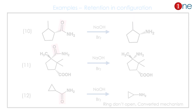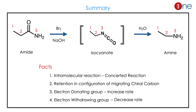Let us summarize the facts seen in the Hofmann reaction. An amide converts into an amine through an isocyanate intermediate; the reagents are bromine and base. Four important facts: the mechanism is intramolecular and concerted; no change in configuration occurs because of the concerted mechanism; if an electron-donating group is present, the rate is higher; an electron-withdrawing group means a lower rate.